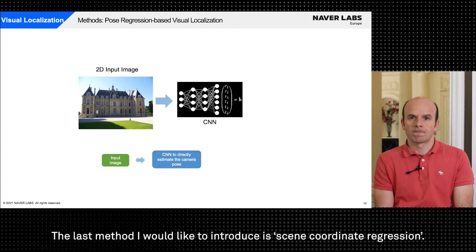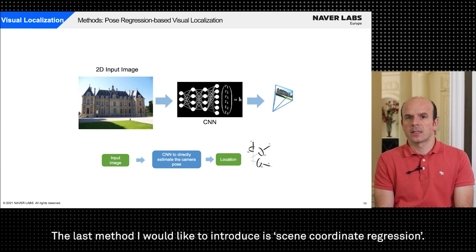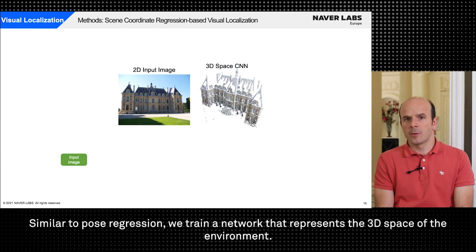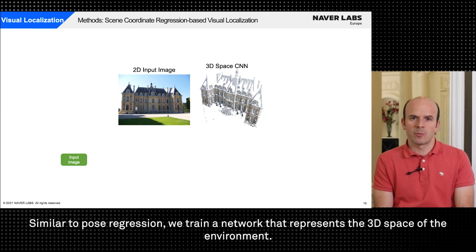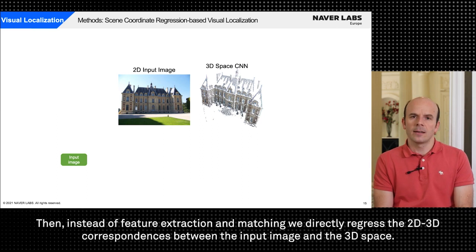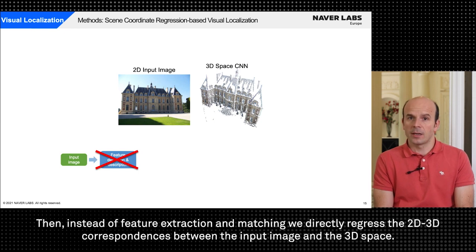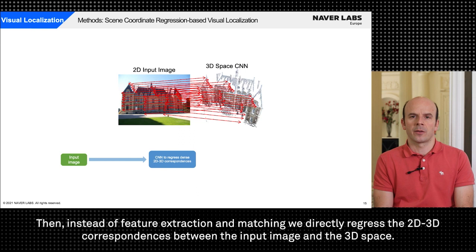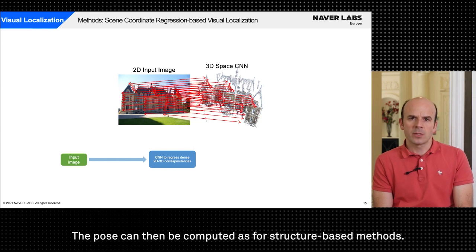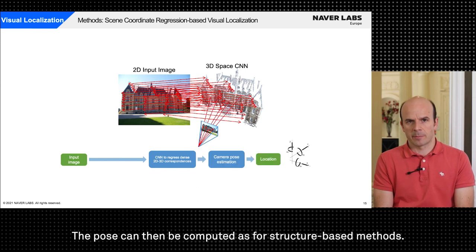The last method I would like to introduce is scene coordinate regression. Similar to pose regression we train a network that represents the 3D space of the environment. Then instead of feature extraction matching we directly regress the 2D-3D correspondences between the input image and the 3D space. The pose can then be computed as for structure-based methods.